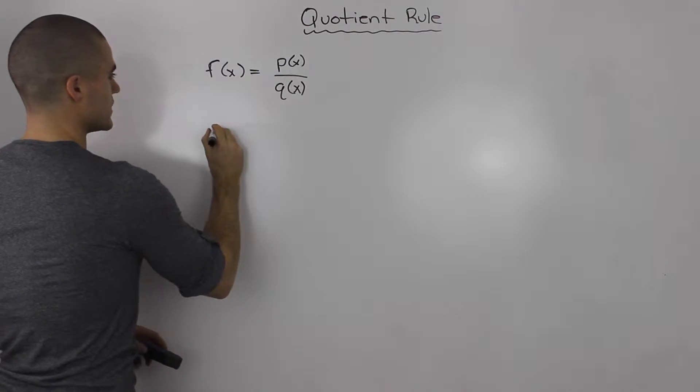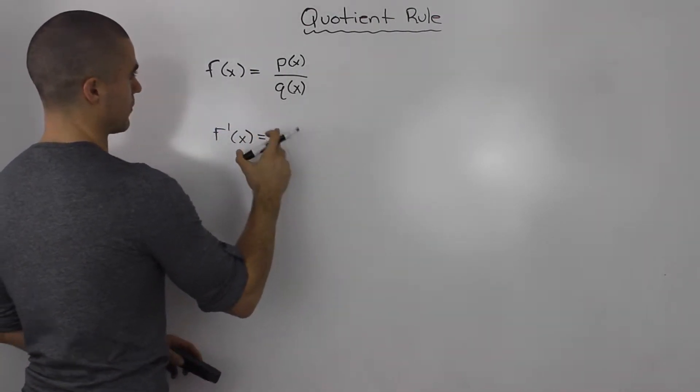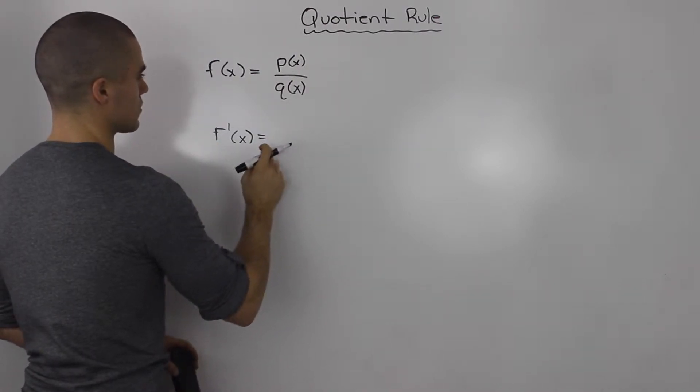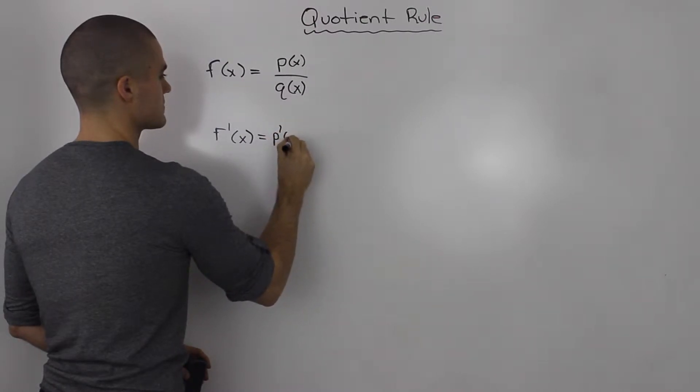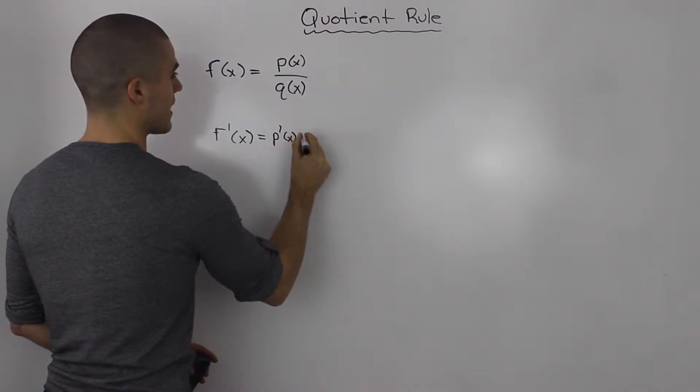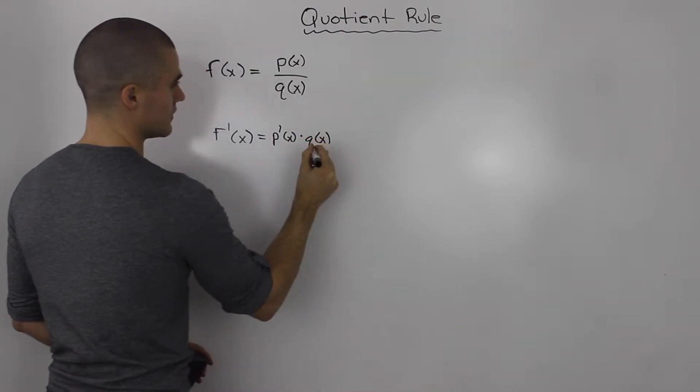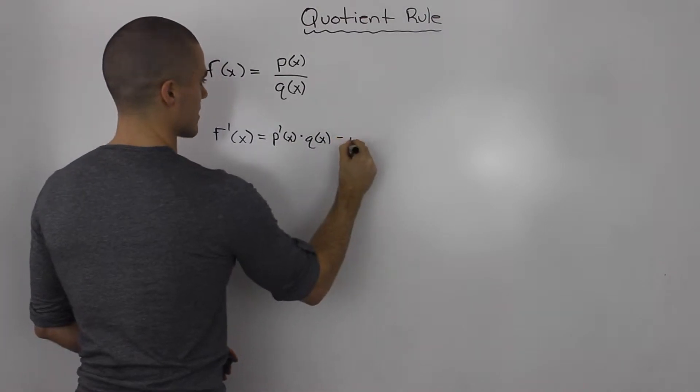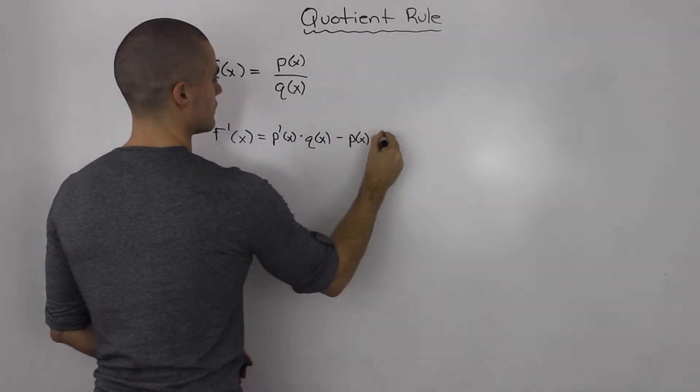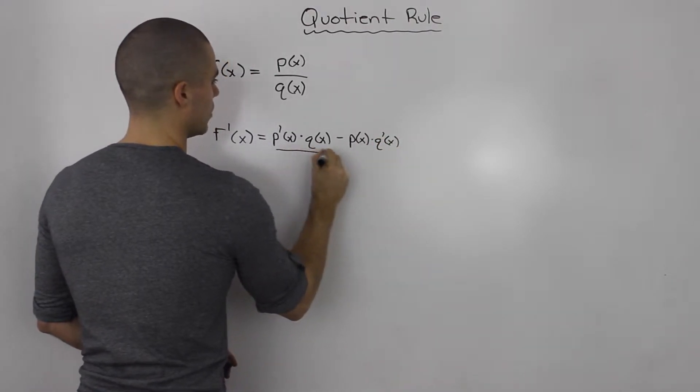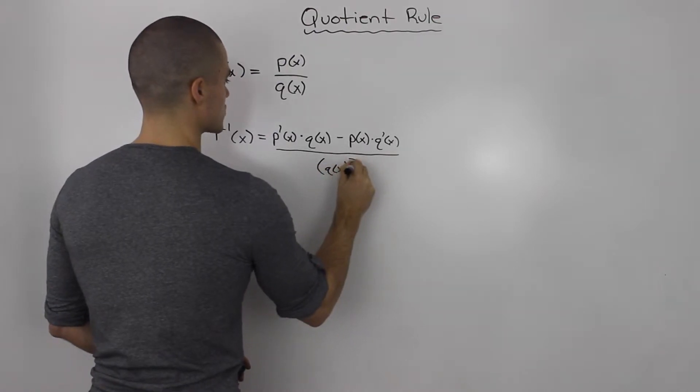The derivative of this kind of function is pretty easy, you just have to remember the formula. It's the derivative of the numerator, p'(x), times the denominator as is, minus the numerator as is times the derivative of the denominator, all over the denominator squared.